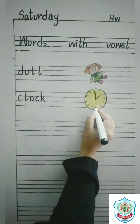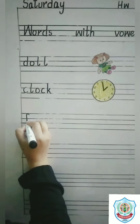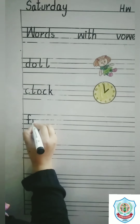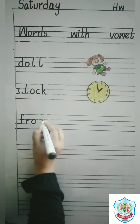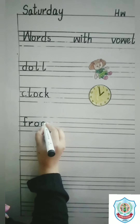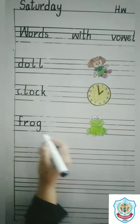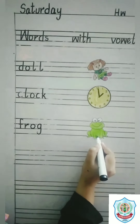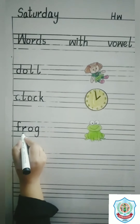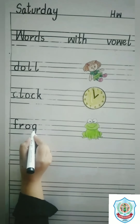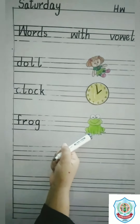The next word is Frog. F has a sound F, R has a sound R, O has a sound O, and G has a sound G. Frog. F, R, O, G. Frog. And this is a picture of a frog.